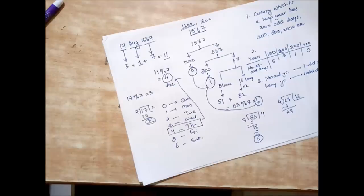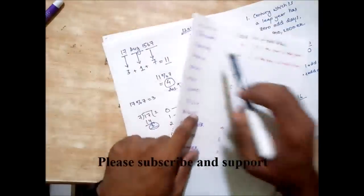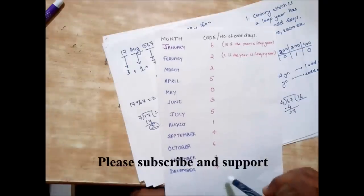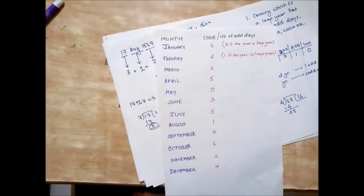This method is applicable to all kinds of years. For leap year there is a slight change in the number of odd days in January and February. I have already written it. These month codes you can find in the link in the description below, and in that link I have also written how to memorize all these codes according to the month. So take care guys, till next time, signing out.